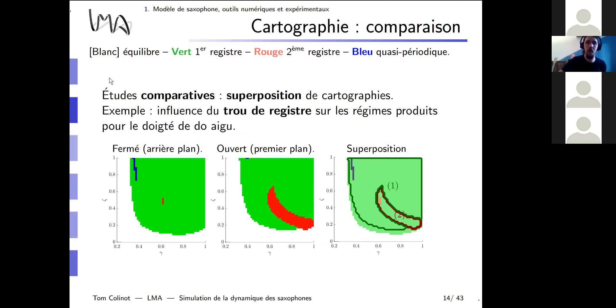On these regime maps: white represents the equilibrium — no sound; green represents the first register, covering a large region; red represents the second register; and blue points denote quasi-periodic regimes. I suggest using these cartographies in a comparative manner to compare between several fingerings or several instruments, by superimposing them.